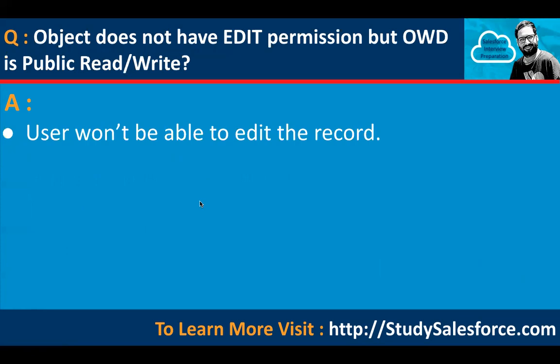An important scenario: if an object does not have edit permission at the object level, but OWD is set to public read-write, the user still won't be able to edit the record. Even if OWD provides write permission, without edit permission at the object level, editing is not possible — object-level security takes precedence.